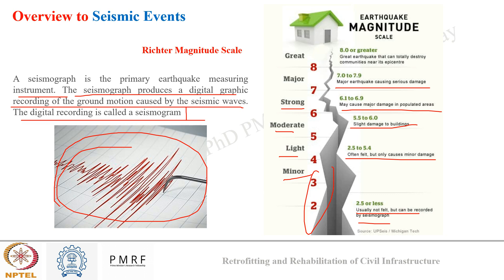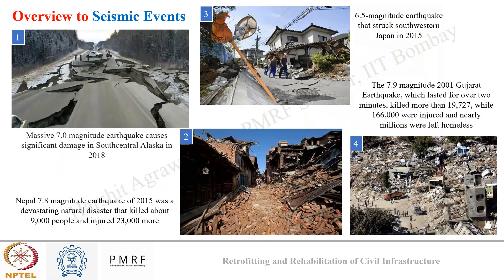For earthquake activity below magnitude 5 or 6 we generally follow codal provisions — providing basic measures during construction or doing minor damage repair afterward. However, for earthquakes above magnitude 6 there are serious threats to both the structure and human life, which have been seen often in the past.